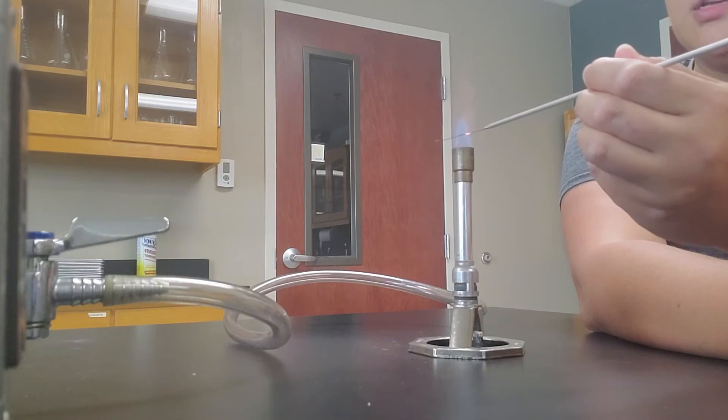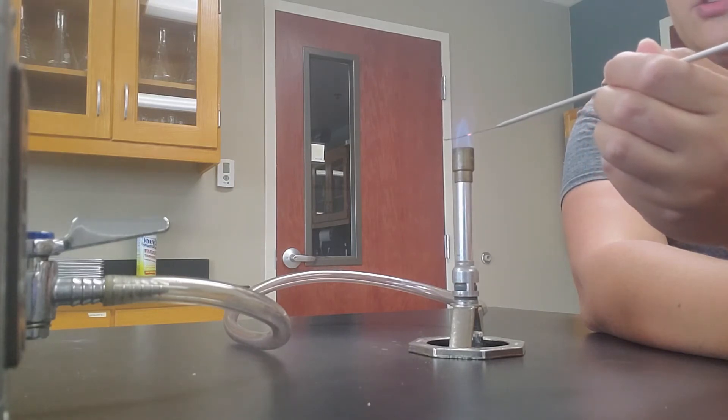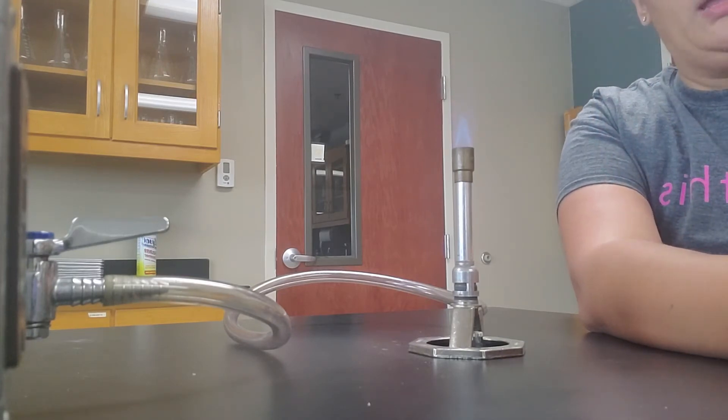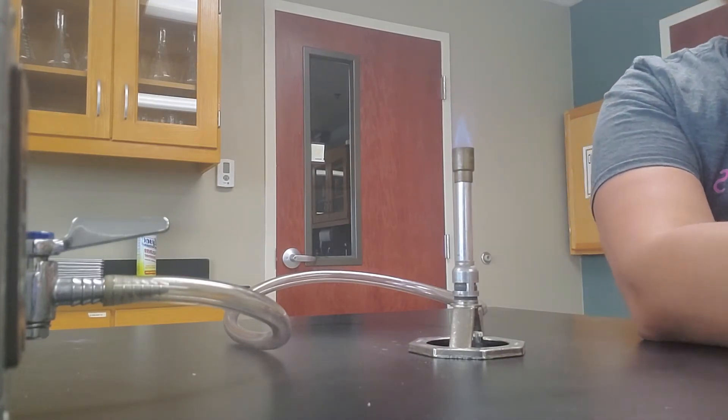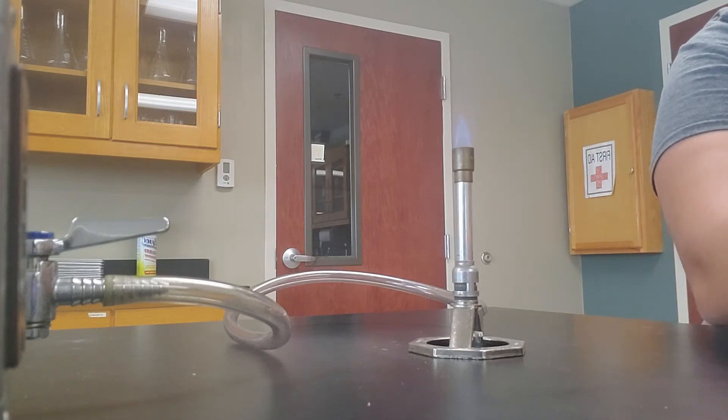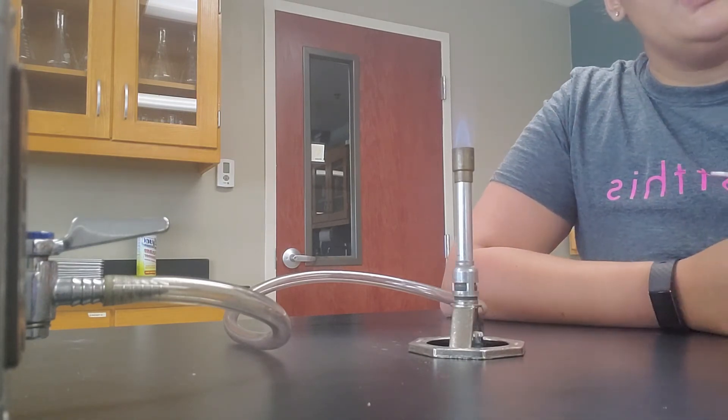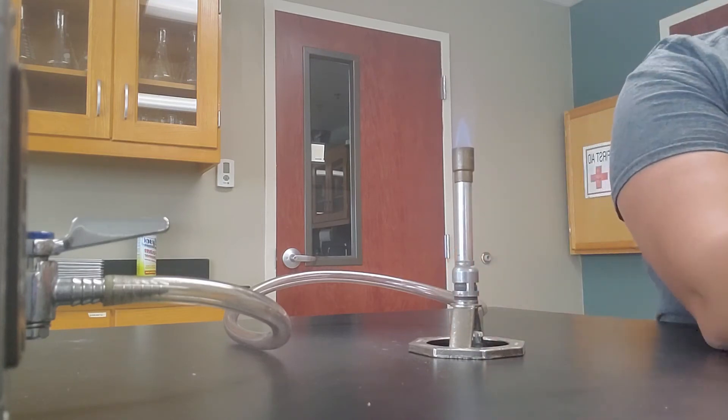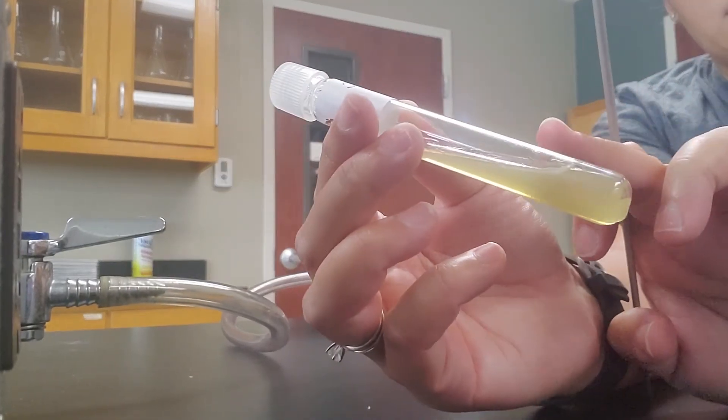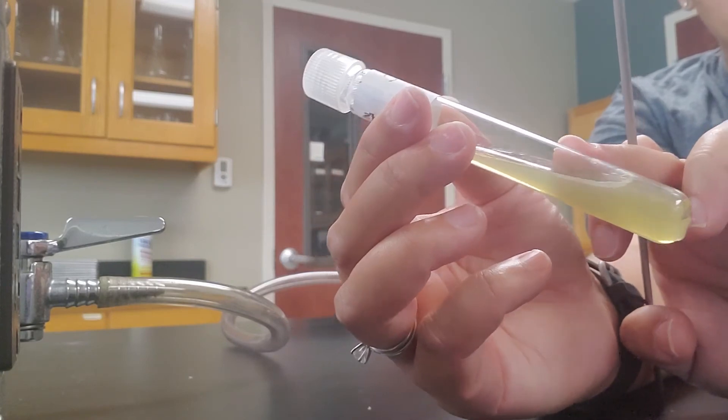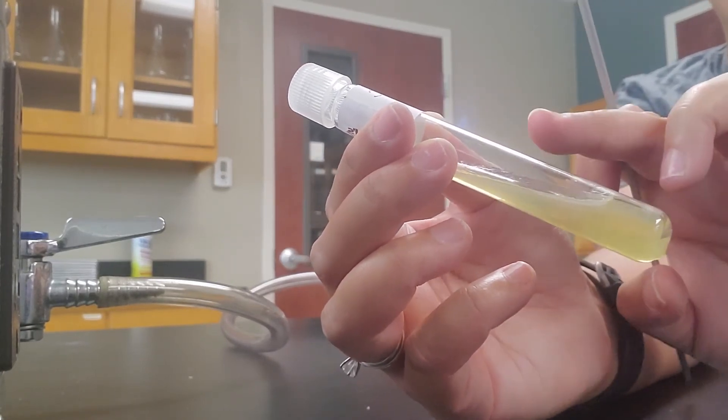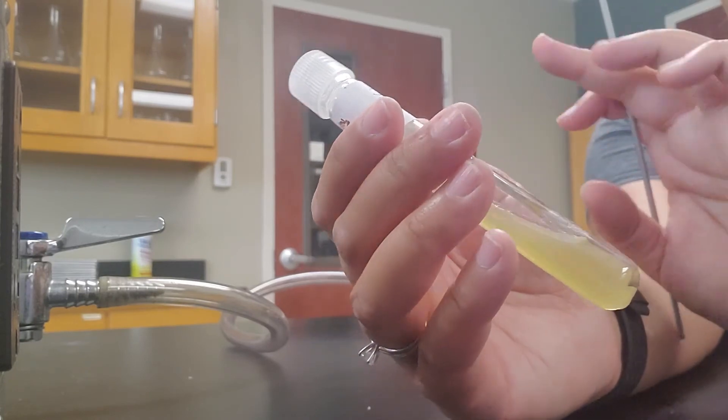So that's the process of an actual transfer between an agar slant to a broth. You can do the same thing going from a broth tube to a slant. And the way that you would do that essentially is by taking a little bit of the broth itself and then just gently going from the base of the tube here and zigzagging your way up, making sure that you don't actually puncture the agar because if you do, you're going to mess up your sample.